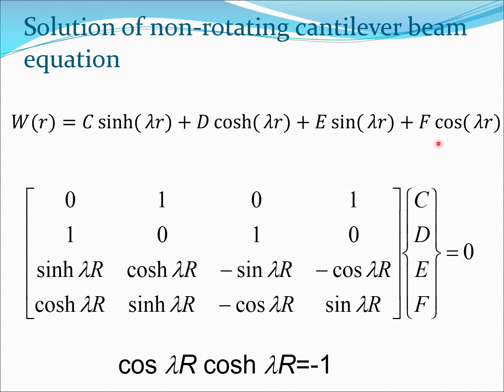Then we enforced the boundary conditions for the cantilever beam and we found that to obtain a non-trivial solution you need to get the determinant of this 4 by 4 matrix to 0 and when we enforce that condition we got this transcendental equation cos lambda r cosh lambda r equal to minus 1.